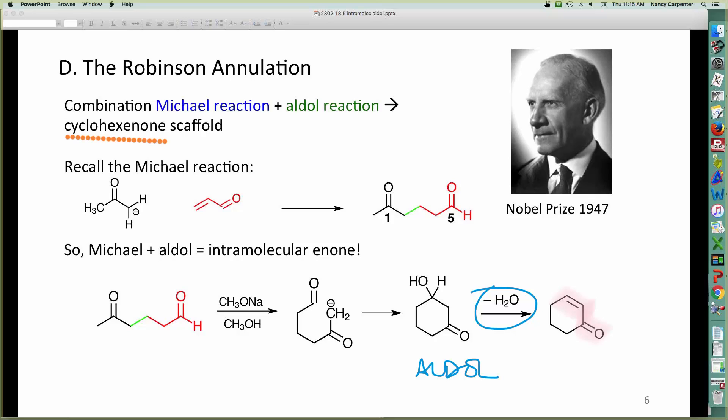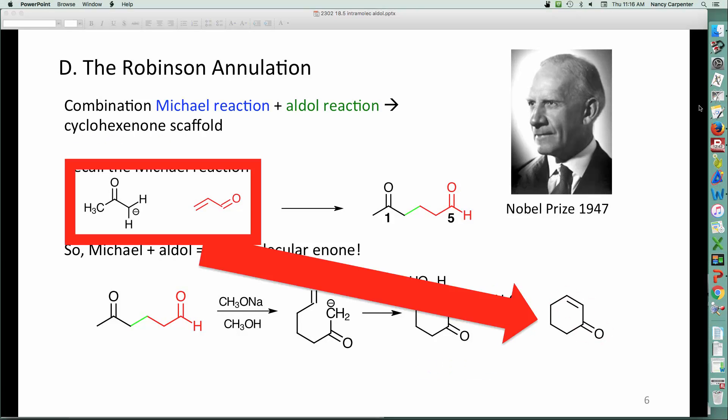So, that is what the Robinson annulation is all about, making cyclohexenones. What Robinson won the Nobel Prize for is that he figured out you would do this in one swell foop. So, starting from a conjugated aldehyde and a ketone, under basic conditions, one swell foop, you can piece together a cyclohexenone in actually excellent yield.